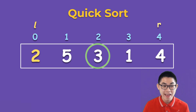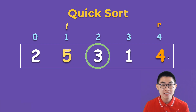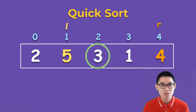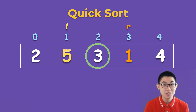Player L will find us a number that is larger than or equal to the pivot. We found it — 5 is larger than the pivot. Now R will find us a number that is either smaller than or equal to the pivot. 4 is not smaller or equal to the pivot, so let's look at 1 — yes, 1 is smaller than 3. And what to do next? We simply swap 5 and 1.